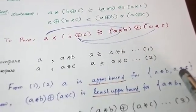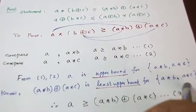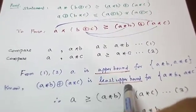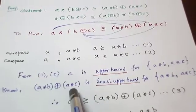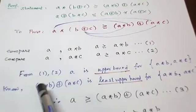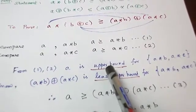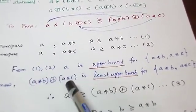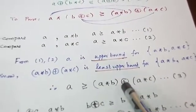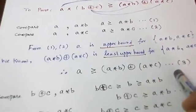One thing is very clear: if we are given two elements X and Y and asked to find an upper bound, we can immediately tell the least upper bound X+Y, which is the standard upper bound. So for A★B and A★C, the standard least upper bound is A★B + A★C. Combining these two results — A is an upper bound and A★B + A★C is the least upper bound — we can say A is greater than A★B + A★C. This gives us inequality 3.